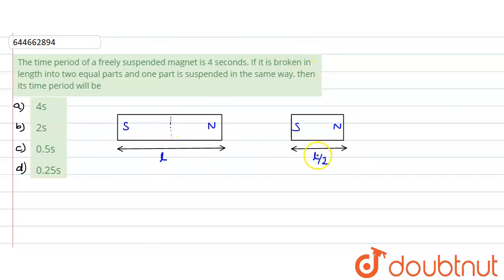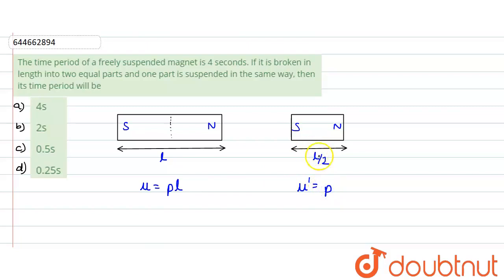Now, what happens to the magnetic dipole moment? In the first case, the magnetic dipole moment μ equals pole strength p multiplied by length L. When we cut the magnet, the pole strength remains the same (p), but the length is reduced to L/2. So the new magnetic dipole moment μ' = pL/2, which equals μ/2.